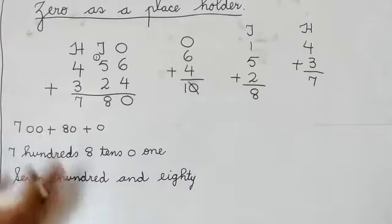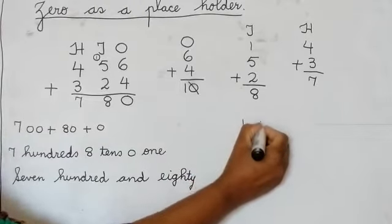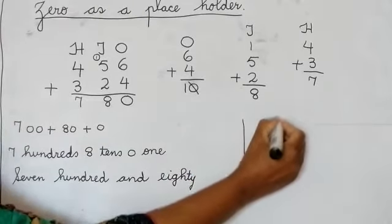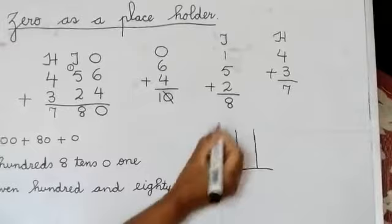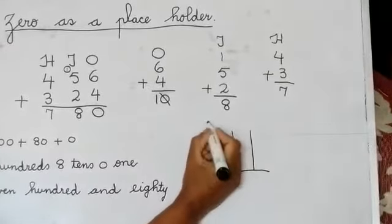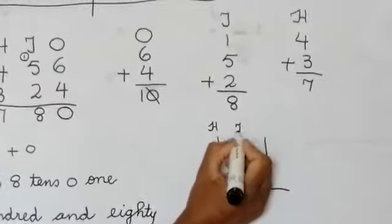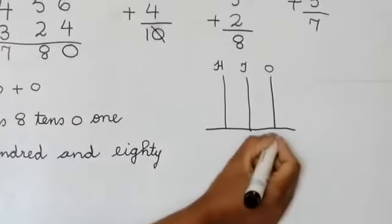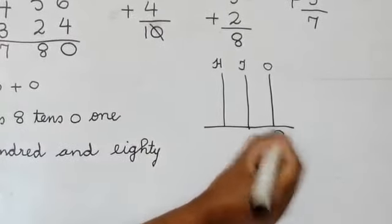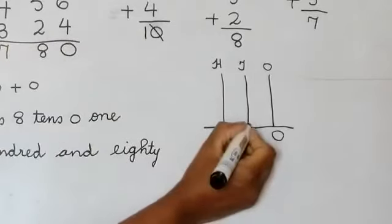Now the last step is we will make the abacus. Again we will put the place value first of all. So under ones there is no number, so we will put 0 as it is. Under tens it is 8.